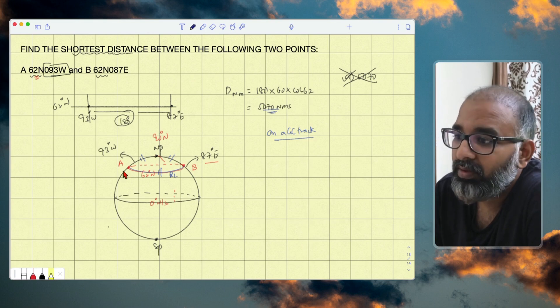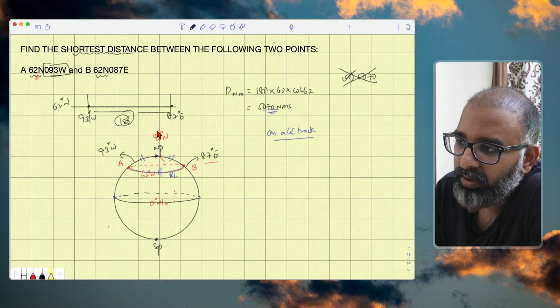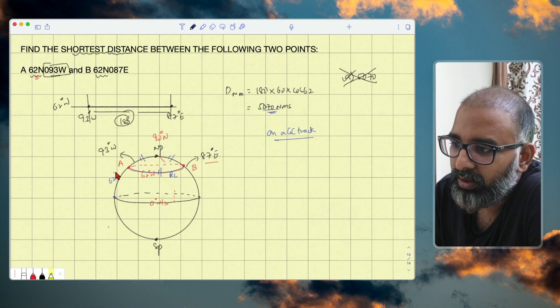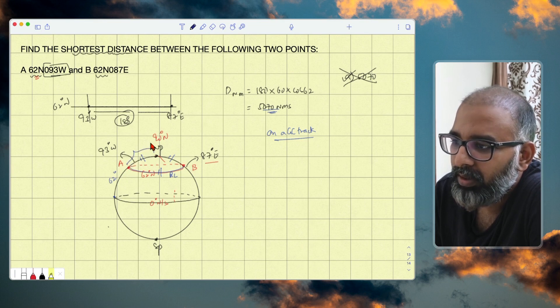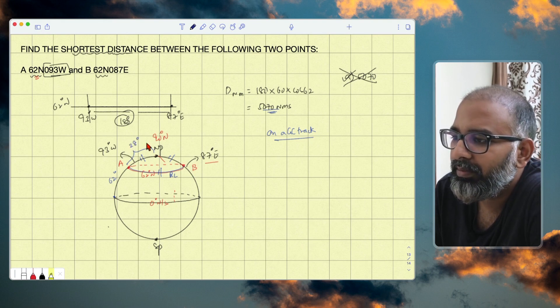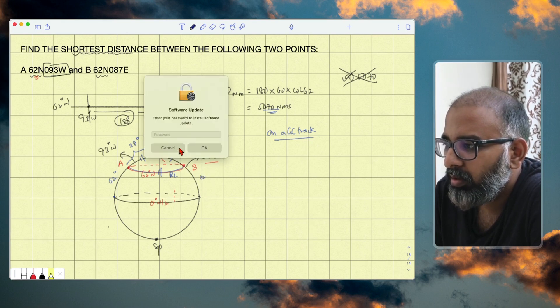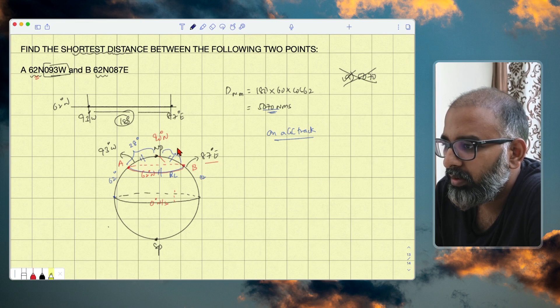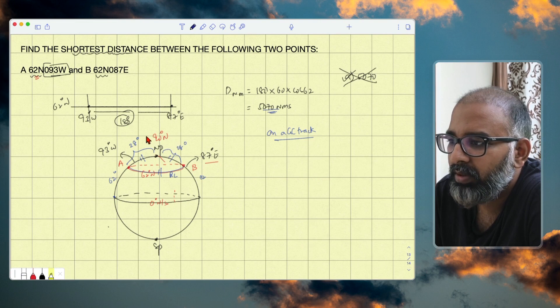From 0 degrees north/south to north pole it is 90 degrees, and till here, till this A, it is 62 degrees. If this is total 90 and this is 62, this part will be 90 minus 62 - 28 degrees, correct. And of course here also 62, and this will be 28 degrees. So total from A to B, if you are flying like this, 28 plus 28, the total will be 56 degrees.